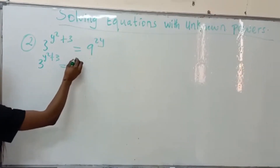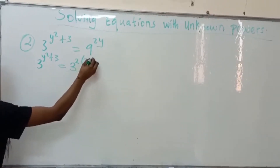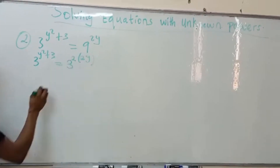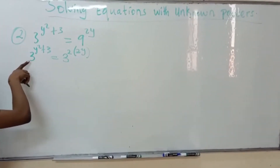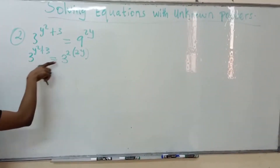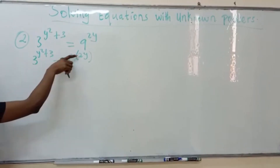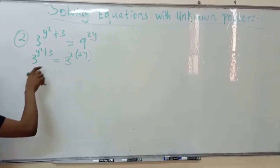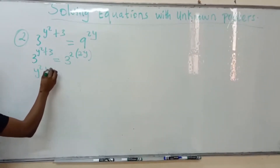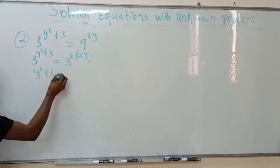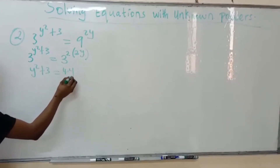So we have 3 raised to power 2 in bracket 2y. Now, because their bases are the same, we equate their powers. So we have y squared plus 3 equals 4y, since 2 times 2 equals 4.